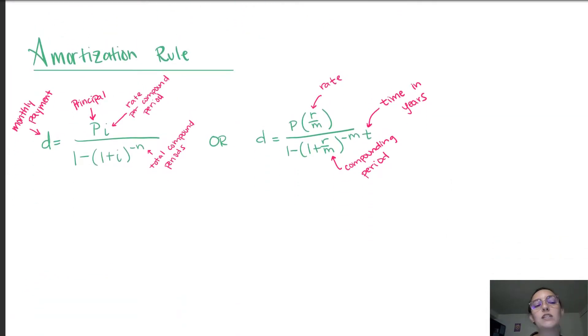So formally, this is what the amortization rule would be. We have D as our monthly payment, P as our principal amount, and then there are two different ways to write the formula. One is more expanded. So I is the rate per compounding period, N is the total compound periods, or if you expand I, I is R divided by M. So where R is the rate and M is the compounding period, and N is the total compound periods, which is the compounding period times the time in years.